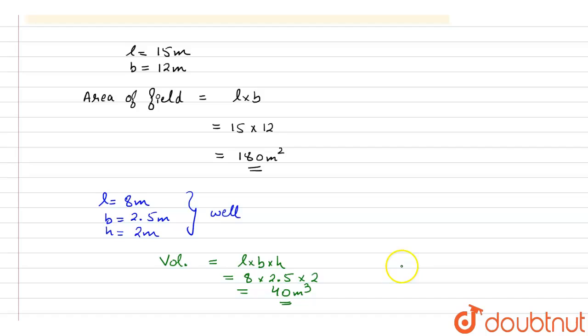We will also calculate the area of this particular well. So area will be equal to length into breadth, that is l into b. So l is 8 and breadth is 2.5, so the area comes out to be 20 meter square.